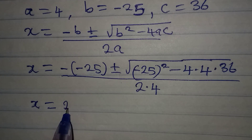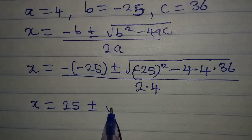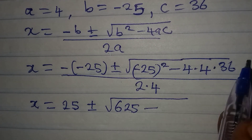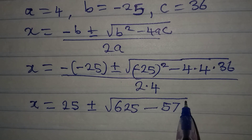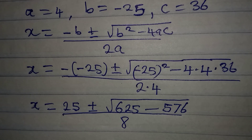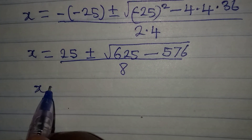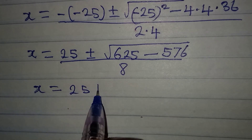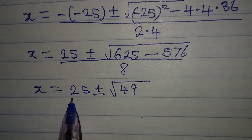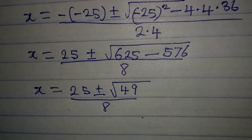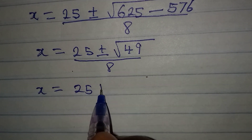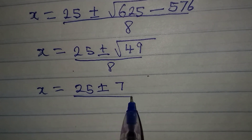So x equals 25 plus or minus the square root of 625 minus 576, all over 8. Subtracting gives 625 minus 576 equals 49, so x equals 25 plus or minus the square root of 49, over 8.